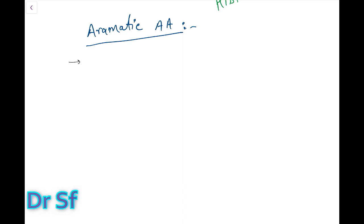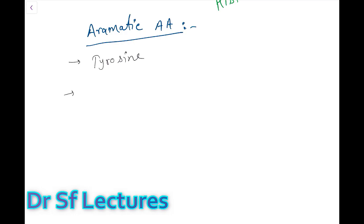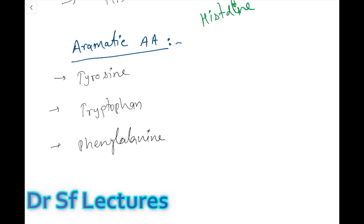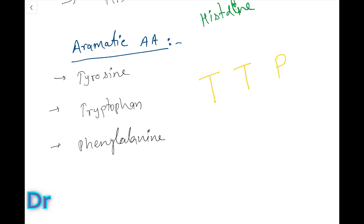The fifth group is aromatic amino acids. The three members are: tyrosine, tryptophan, and phenylalanine. To remember this group, use the mnemonic 'TTP,' which in medical terminology stands for Thrombotic Thrombocytopenic Purpura.